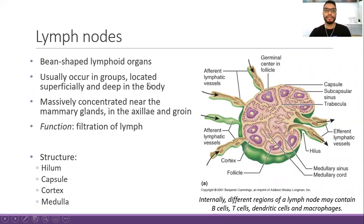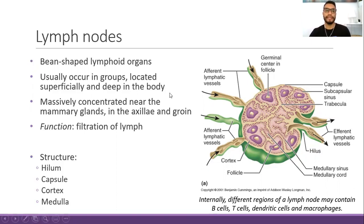Lymph nodes usually occur in groups. They are located superficially and also deep in the body. Remember the lecture about the circulatory system, where you learned the structure of the lymph vessels, including lymphatic capillaries superficially in the skin and others that are located more deep in the body. They are massively concentrated near the mammary glands, the axilla, the groin, and the cervical area as well.